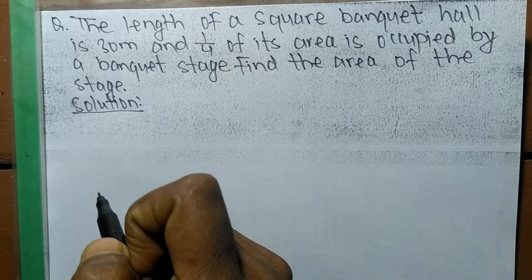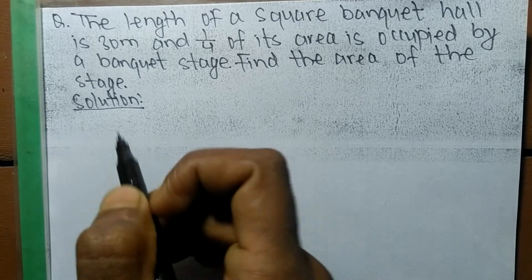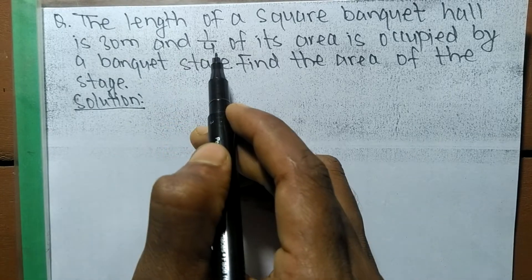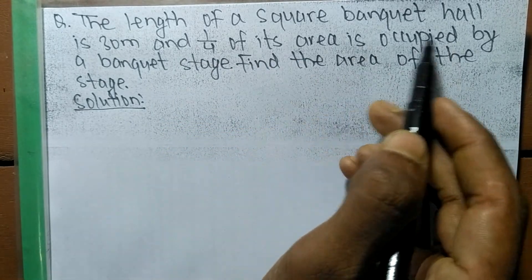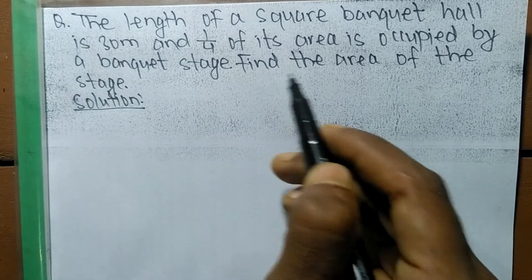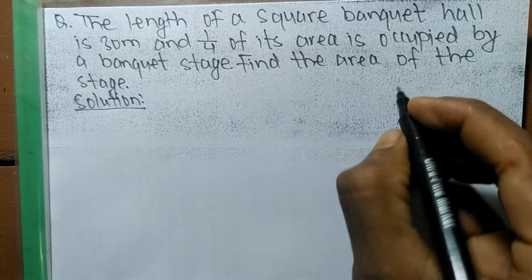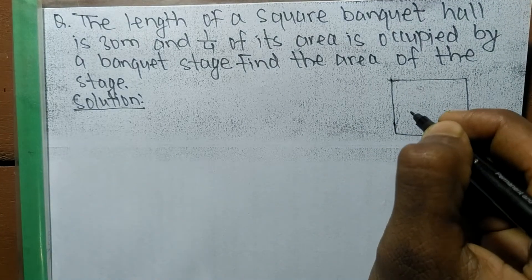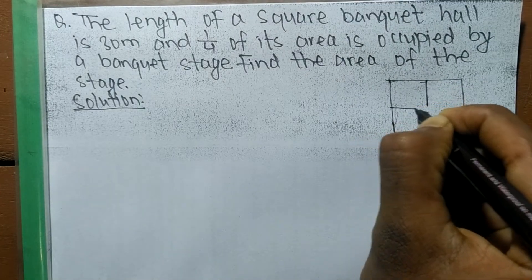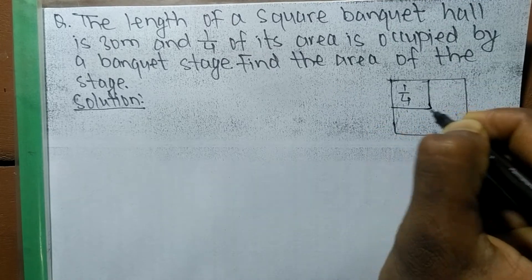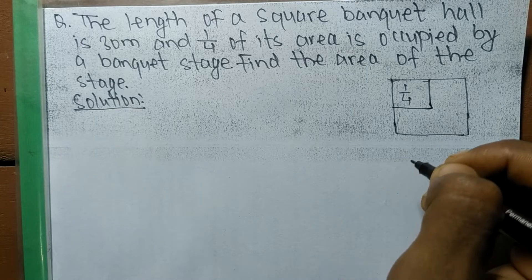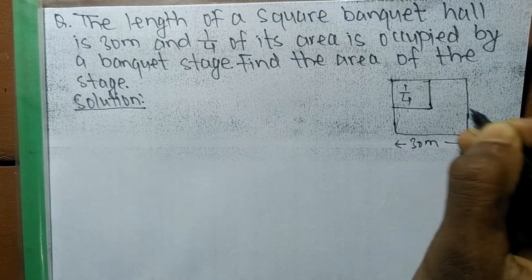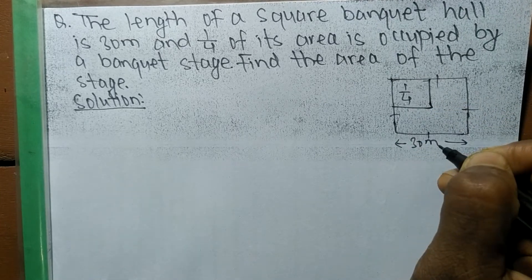Today in this video we are going to solve a word problem. The question is: the length of a square banquet hall is 30 meters, and 1/4 part of its area is occupied by a banquet stage. Find the area of the stage. Here is a square banquet — since it is square, all its sides are equal. There is a stage inside it, and the stage occupies 1/4 part of the whole area.